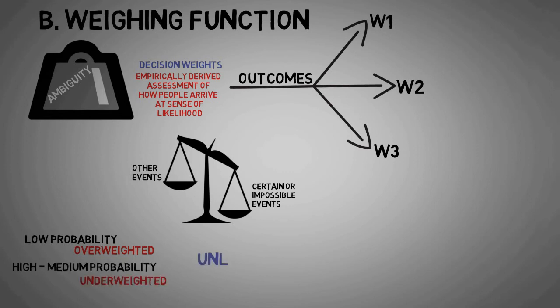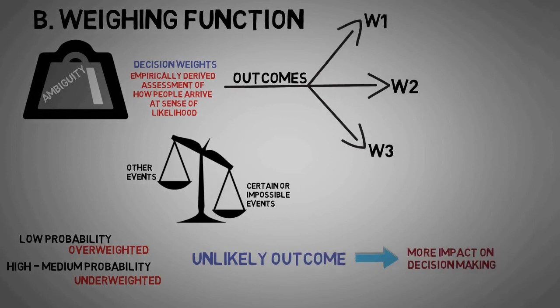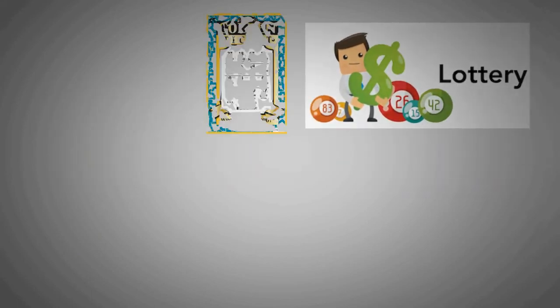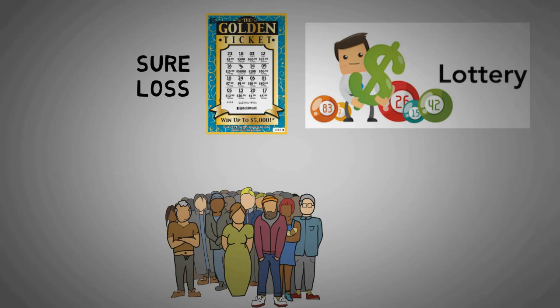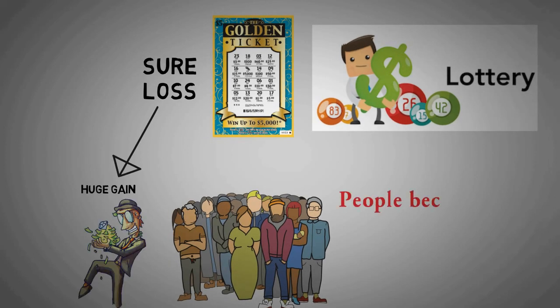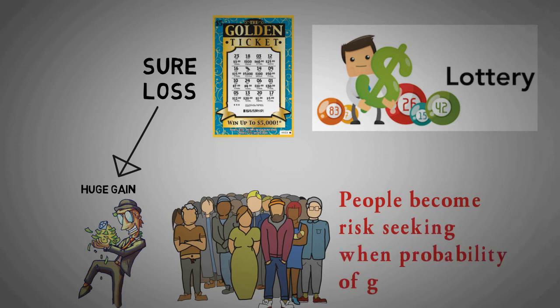Something which is unlikely to happen has more impact on decision making. Let's take another example of lottery and insurance. In lotteries, people are willing to take sure loss for non-existent chance of huge gain. So people become risk-seeking when probability of gain is low.